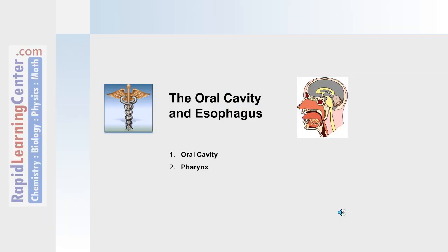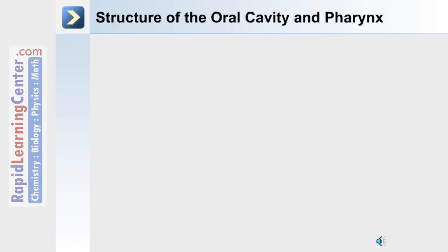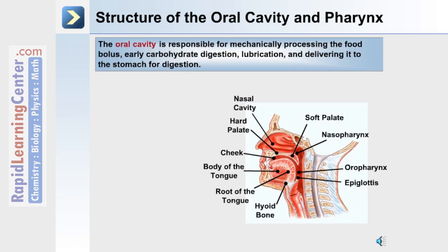Now let's move on to discuss the oral cavity and the esophagus, as well as the pharynx, which is the connection between these two. The first part of the digestive system is the oral cavity. Let's use this diagram to describe the anatomy in this region.